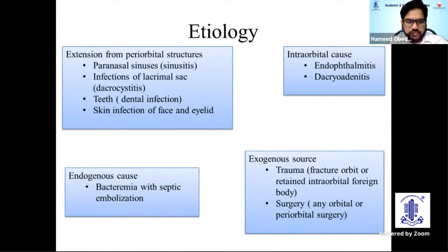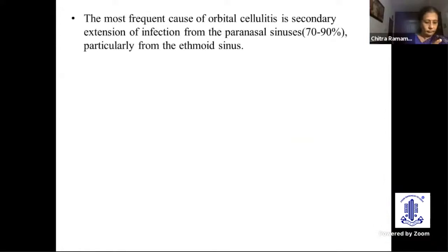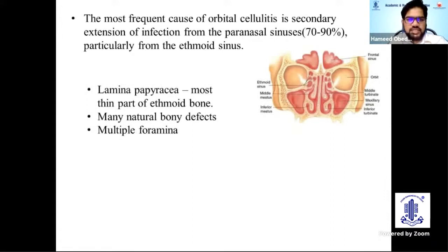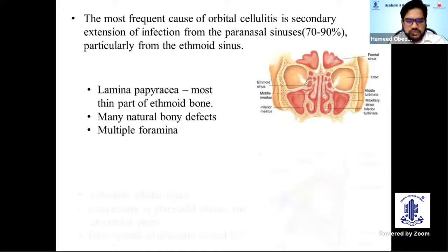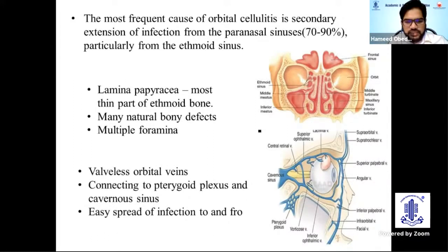It can also arise from a distant focus of infection through bacteremia. The most frequent cause of orbital cellulitis is secondary to extension from the paranasal sinuses, especially the ethmoid sinuses, involved in 70–90% of cases, since the lamina papyracea is the thinnest part of the ethmoid bone with many natural bony defects and foramina that allow easy passage of infection. Orbital veins are valveless, connecting to the pterygoid plexus and cavernous sinus, facilitating easy spread of infection.